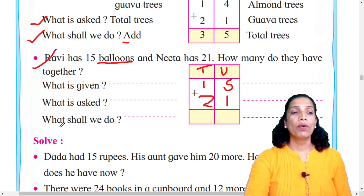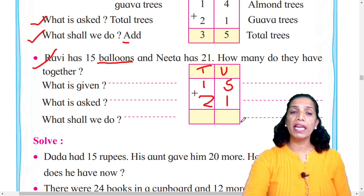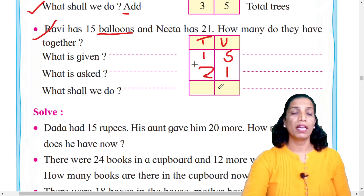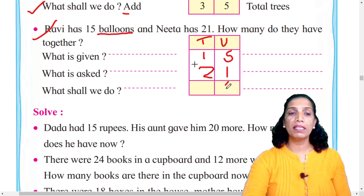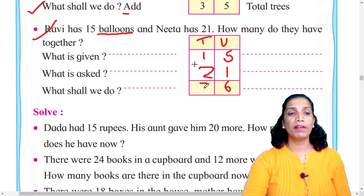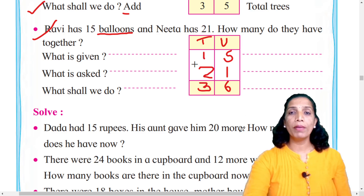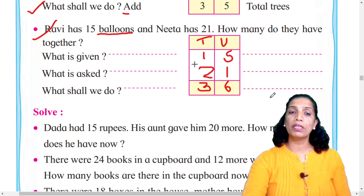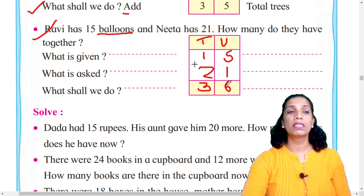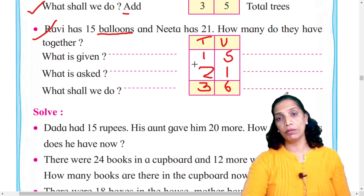Now we do the addition. First units: 5 plus 1 equals 6. Then tens: 1 plus 2 equals 3. So 15 plus 21 — how many altogether? 36 total balloons. Ravi's balloons plus Neeta's balloons: 15 plus 21 equals 36 total balloons.